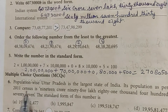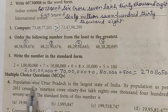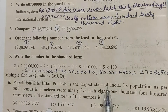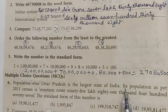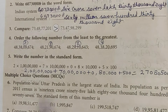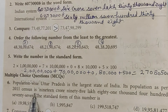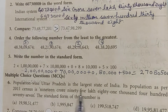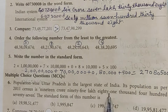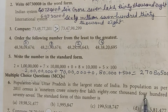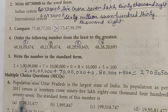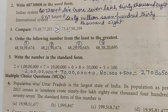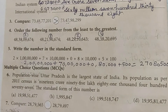Multiple choice questions. Population-wise, Uttar Pradesh is the largest state of India. Its population as per the 2011 census is nineteen crore ninety-five lakh eighty-one thousand four hundred seventy-one. The question asks for the standard form of this number.